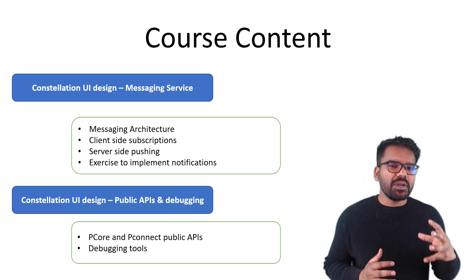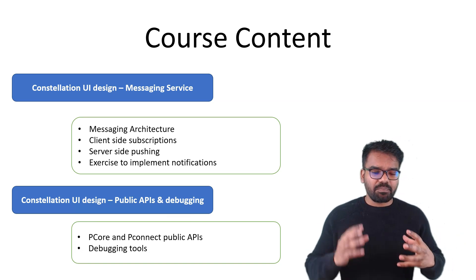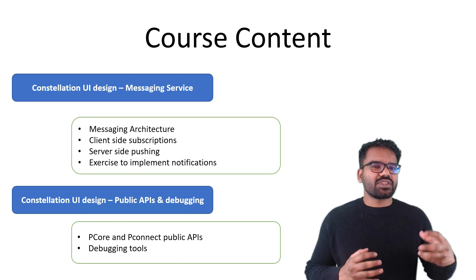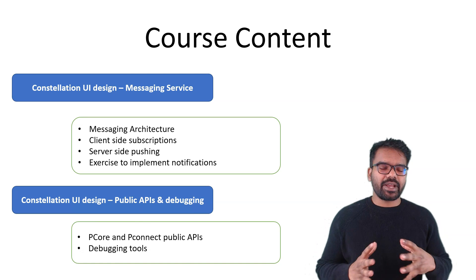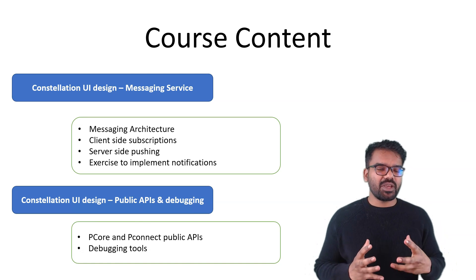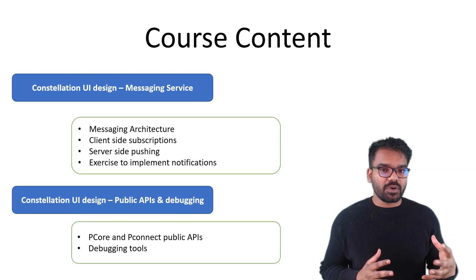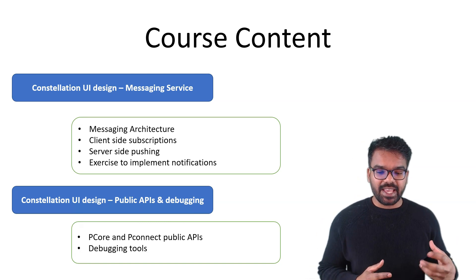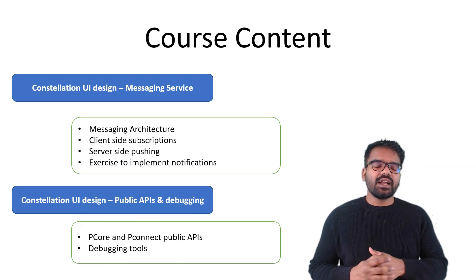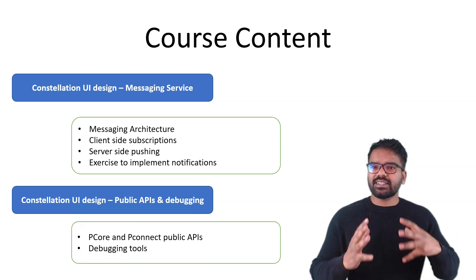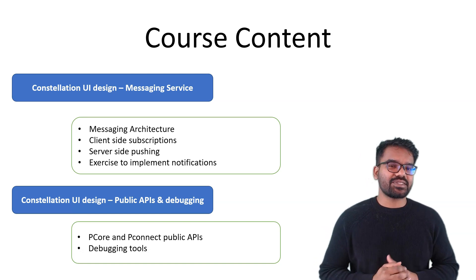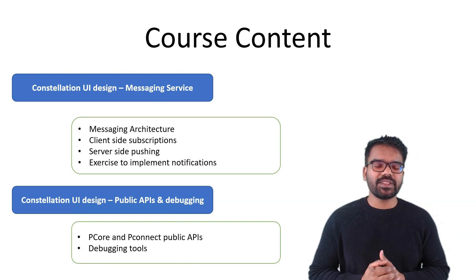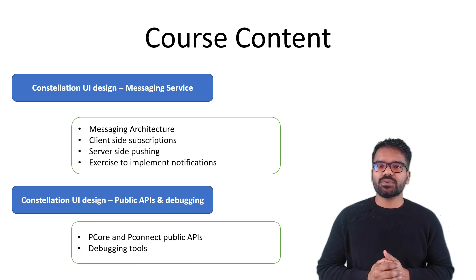Then we will talk about the public APIs — the pConnect and pCore APIs — which are like a backbone for the constellation JS engine. Pega provides a lot of APIs that can be used out of the box, and it is our responsibility to know what types of public APIs are available. Finally, we will also cover how to debug a constellation application using different available tools.